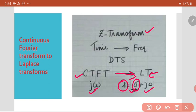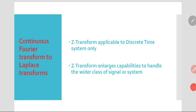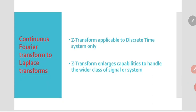These are some of the basics we must know when moving towards the Z transform. To summarize: the Z transform is applicable to discrete time systems only, and the Z transform has the capability to handle a wider class of signals or systems. In the next lecture, we will see the properties of the Z transform one by one, and we will also see the region of convergence, or ROC, of the Z transform. Thank you.